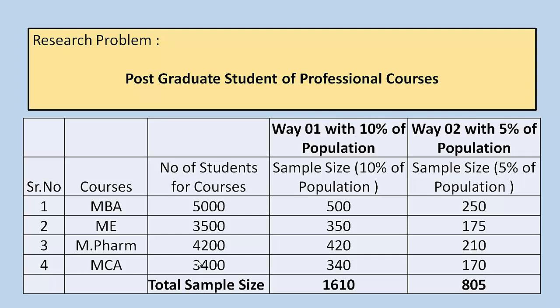For this thumb rule, we should select at least 5% to 10% of the sample from the population. In the 4th column we have the sample size with 10% of the population, and in the 5th column we consider the sample size with 5% of the population.